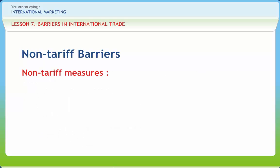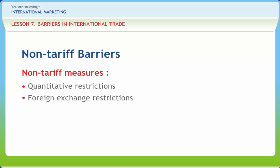Non-tariff measures include: First, Quantitative Restrictions — the maximum quantity of different commodities allowed to be imported over a period of time from various countries is fixed in advance. Second, Foreign Exchange Restrictions — the importer must ensure that adequate foreign exchange would be made available by obtaining a clearance from the exchange control authorities of the country before concluding the contract with the supplier.